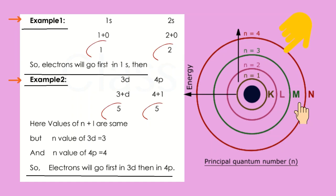Example 2. For 3d, n plus l equals 3 plus 2 equals 5. For 4p, n plus l equals 4 plus 1 equals 5. In this case value of n plus l is same, that is 5. But 3d means shell number 3, and 4p means shell number 4. Therefore electrons go first in 3d then in 4p.